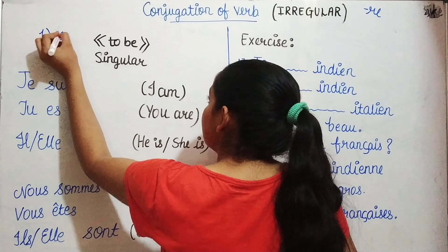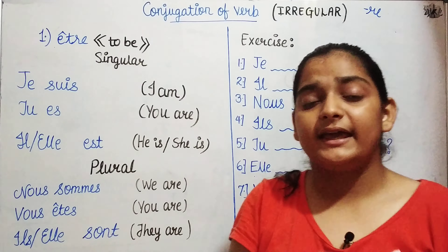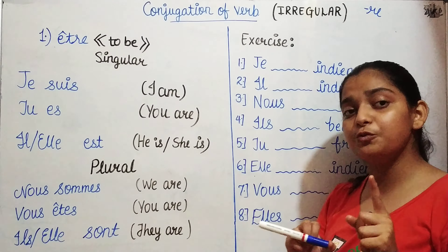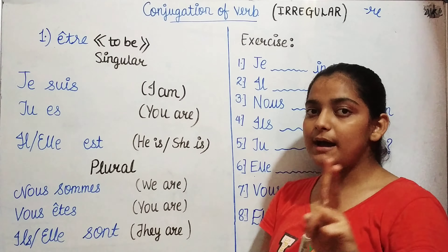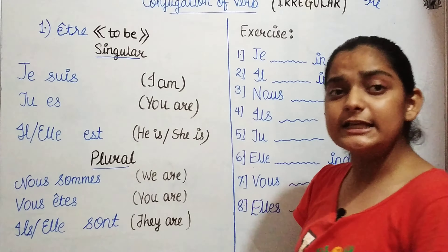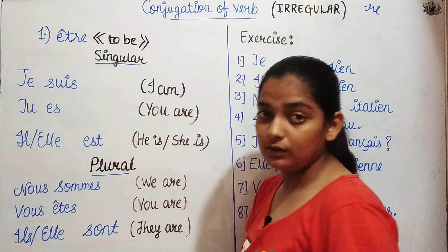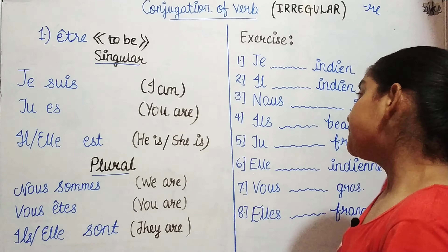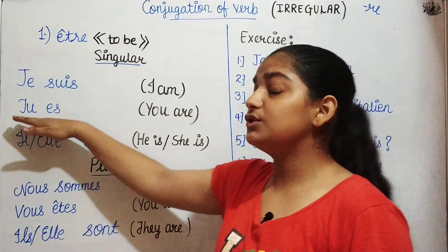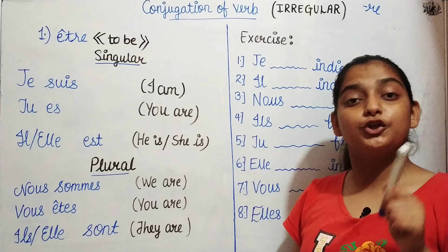Être means 'to be.' There are two parts: singular and plural. Let's see the singular part first. The first form is je suis, which means 'I am.' The second is tu es, which means 'you are.'